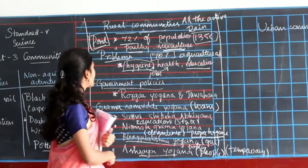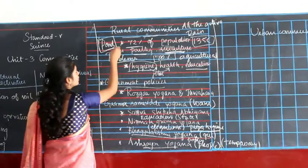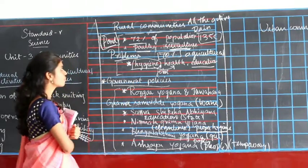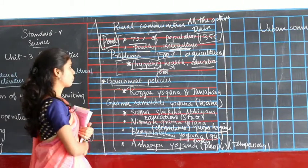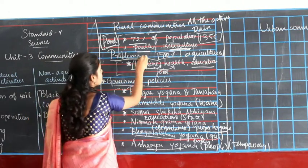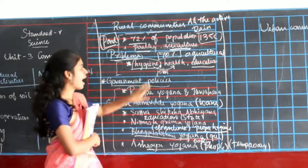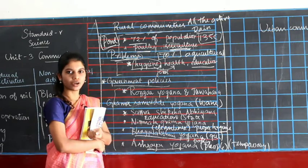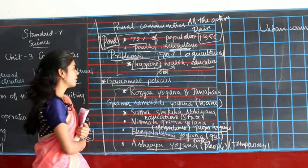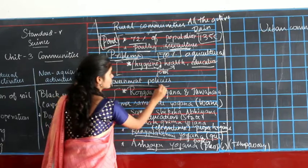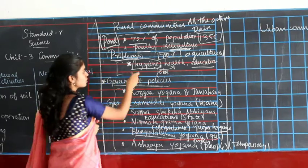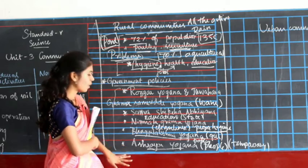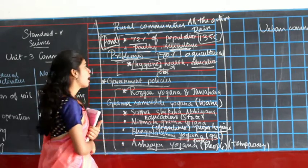Now this raises three questions. First, what are the problems faced by people living in rural communities? As we know, hygiene, health, education, and jobs are the major problems for people living in villages. Second, what are the government policies to overcome those problems? These are the policies given by the government.